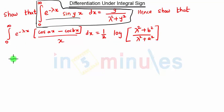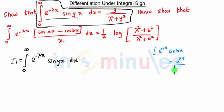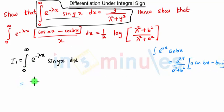First we will solve the first part. Let's say this integration is I₁ = ∫₀^∞ e^(-λx) sin(yx) dx. We have a direct formula for this: ∫ e^(ax) sin(bx) dx = e^(ax)/(a² + b²) · (a sin bx − b cos bx).